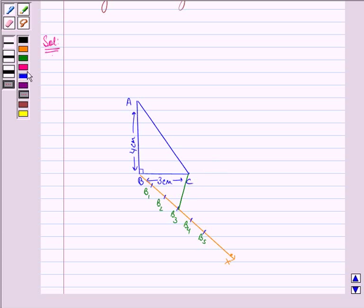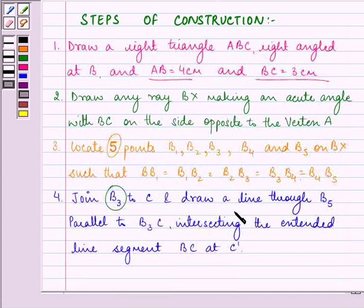And now we need to extend BC and we need to draw a line which is parallel to B3C through B5 which is intersecting the extended BC at C dash. So here we have a line which is parallel to B3C, that is B5C dash. This was our fourth step which is we have drawn a line through B5 parallel to B3C intersecting the extended line segment BC at C dash.